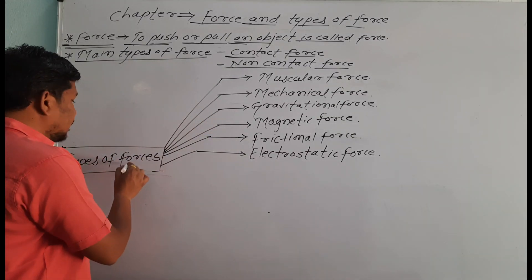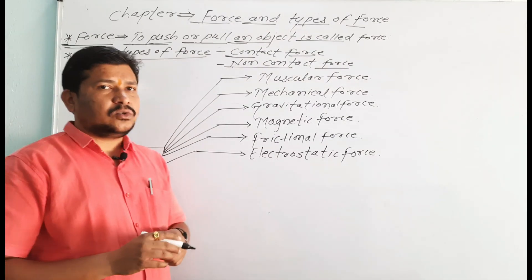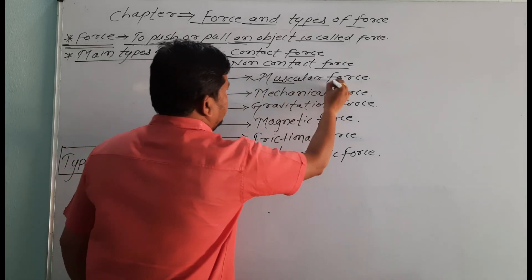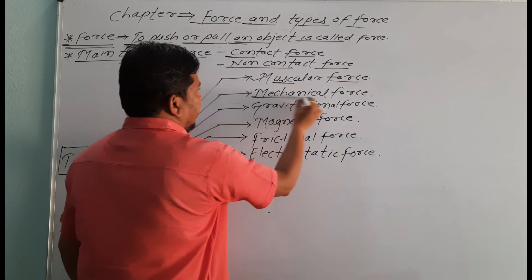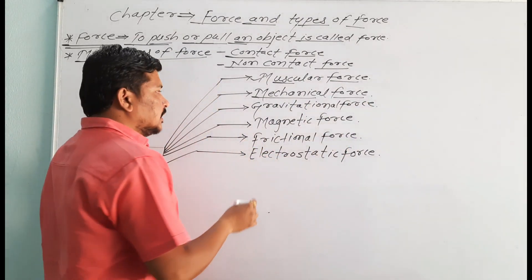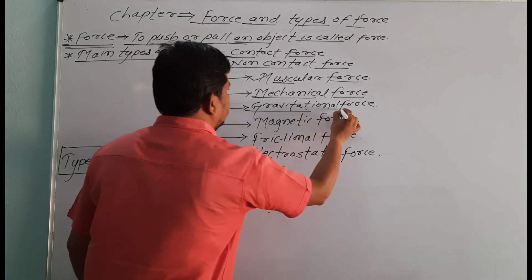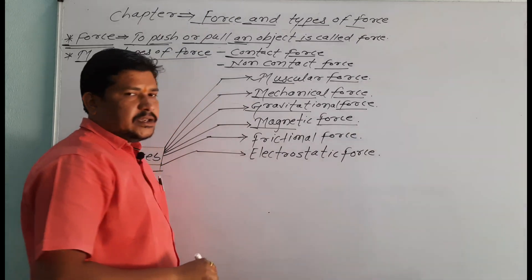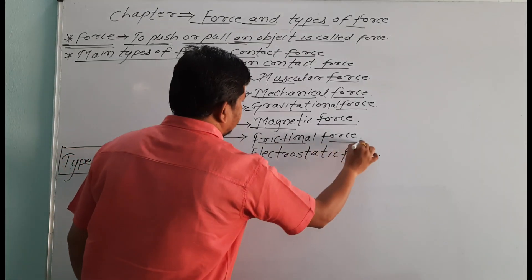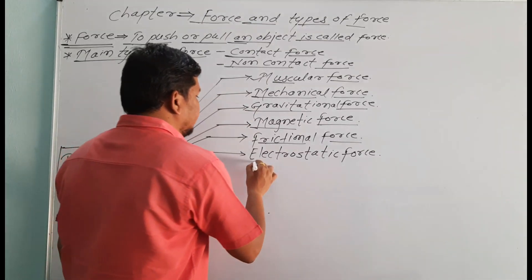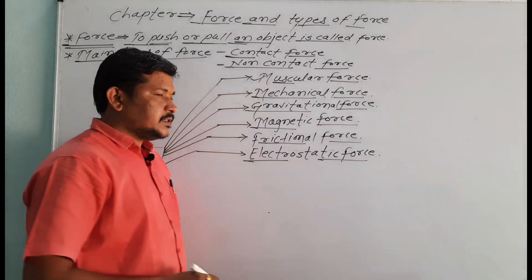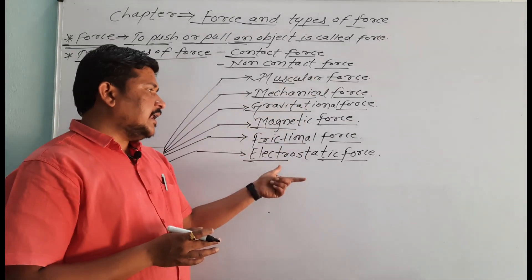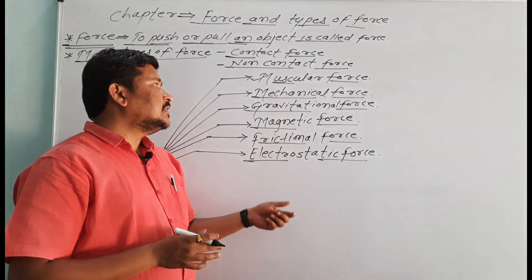Now let us look at the types of force one by one. First type is muscular force (स्नायू बल). Second type is mechanical force (यांत्रिक बल). Third type is gravitational force (गुरुत्व बल). Fourth type is magnetic force (चुंबकीय बल). Fifth type is frictional force (घर्षण बल). And finally, electrostatic force (स्थिर विद्युत बल).